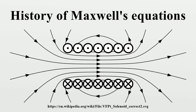A more theoretical approach was suggested by Hendrik Lorentz along with George FitzGerald and Joseph Larmor. Both Larmor and Lorentz derived the Lorentz transformation as one under which Maxwell's equations were invariant. Poincaré analyzed the coordination of moving clocks by exchanging light signals and established the mathematical group property of the Lorentz transformation. Sometimes this transformation is called the FitzGerald-Lorentz transformation or even the FitzGerald-Lorentz-Einstein transformation.